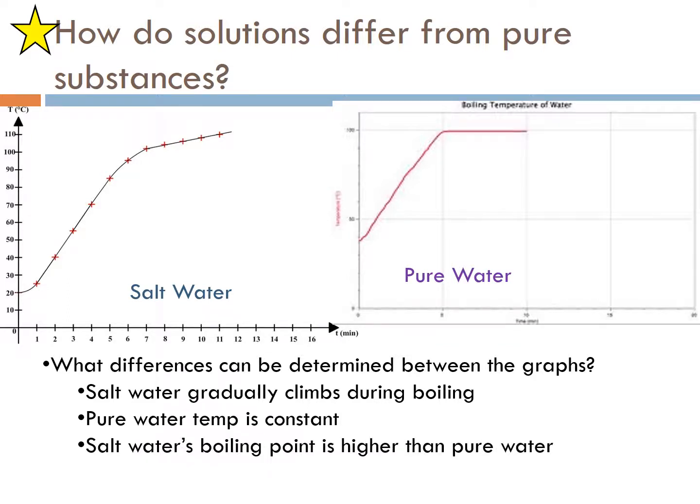Salt water's boiling point is actually higher than pure water. So if you're trying to make pasta it's always better to put the salt at the end once it boils, because it takes longer for it to boil if you put salt in previously.